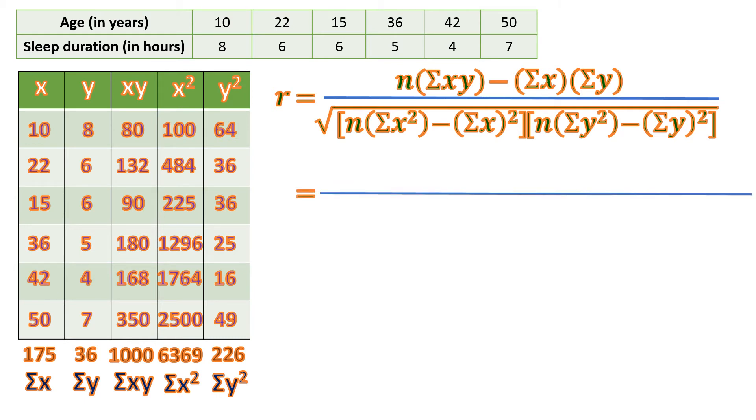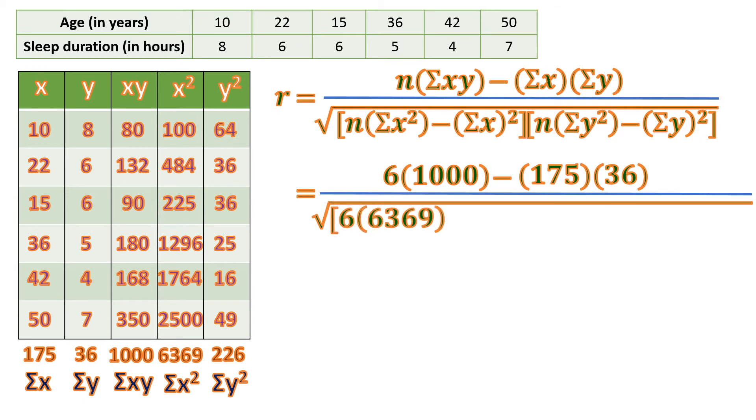Let us substitute now. We have N times sum of XY: 6 times 1000, minus sum of X times sum of Y: 175 times 36, over the square root of N times the sum of X squared: 6 times 6369, minus the square of sum of X, which is the square of 175, times N times the sum of Y squared: 6 times 226, minus the square of sum of Y, which is the square of 36.